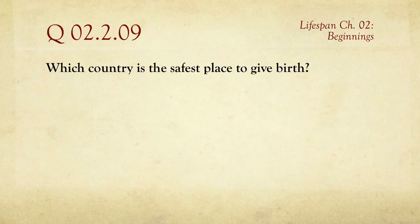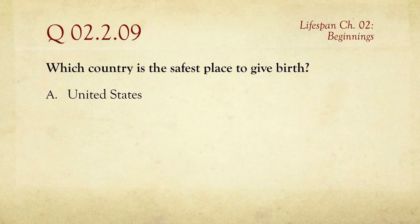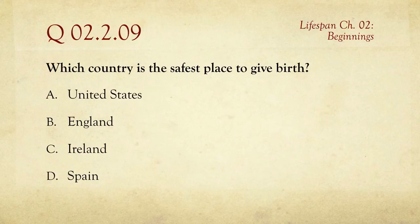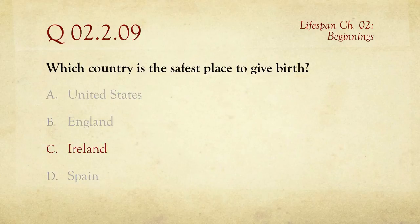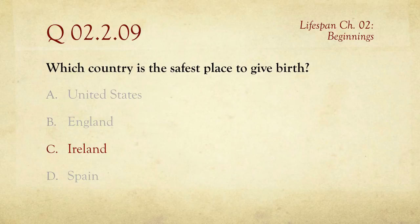Number nine: which country is the safest place to give birth, meaning the lowest child mortality rate? The choices are A, the United States; B, England; C, Ireland; or D, Spain. Interestingly, the answer is Ireland, which has a lower child mortality rate than the U.S. The U.S. has a number of health problems, though part of that may be because our quality of health care keeps sick people alive longer, increasing measured sickness rates. But Ireland has the lowest child mortality rate of these four countries.